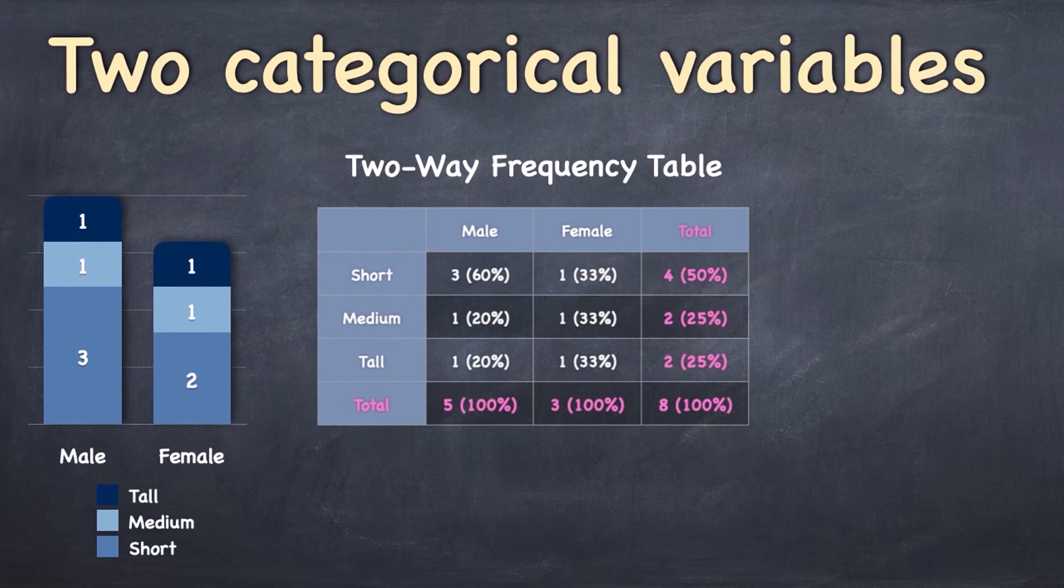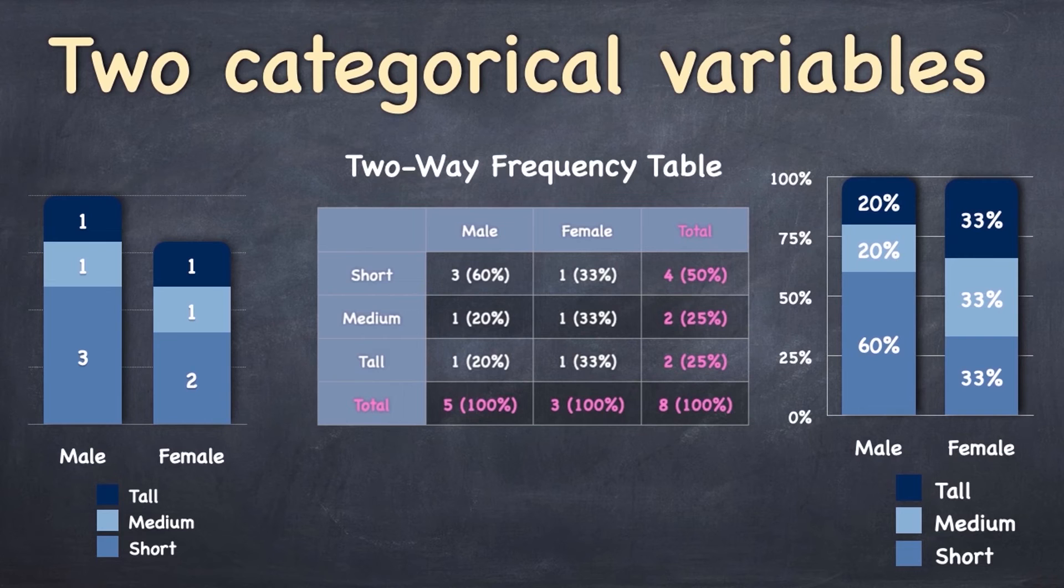So firstly, you can have a stacked bar chart where the height of each column is determined by the actual number of observations. Or you can stack them by percentage so that each column towers up to 100%, making it much easier to visually compare proportions.